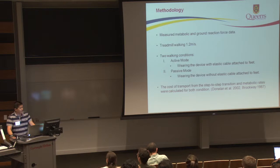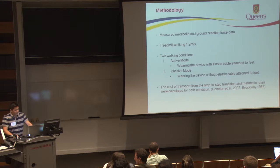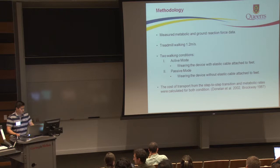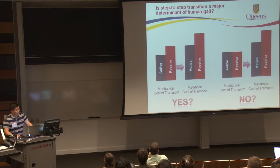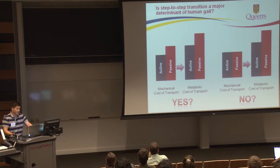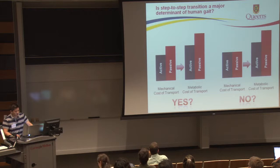We then computed the average cost of transport for the metabolic rate and mechanical step-to-step transition cost. For the purpose of discussion, we pose a question: is the step-to-step transition a major determinant of human gait? If it is, then a difference in the step-to-step transition cost between conditions should produce a proportional difference in metabolic cost as well. However, if it's not, we could end up with a scenario where the mechanical cost of the step-to-step transition does not change yet still observe a change in metabolic cost. Please stop by my poster to see the results.